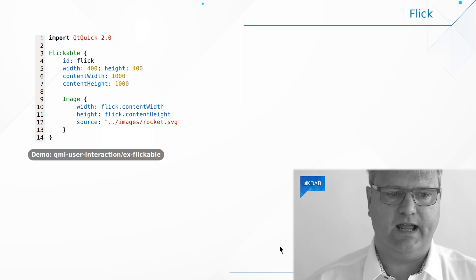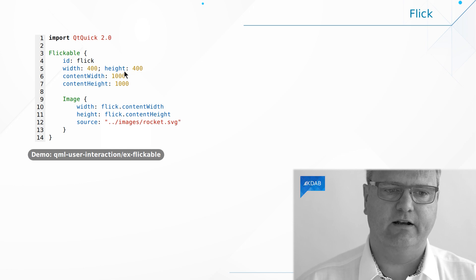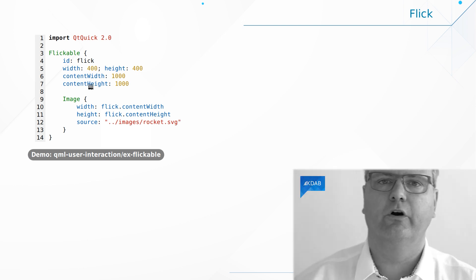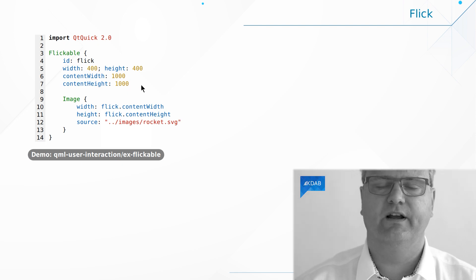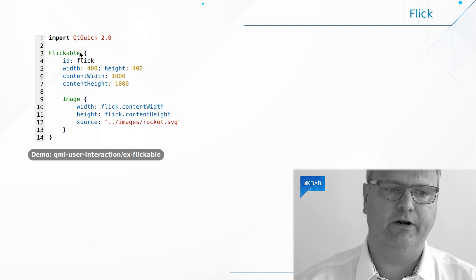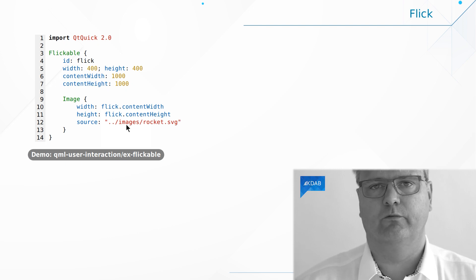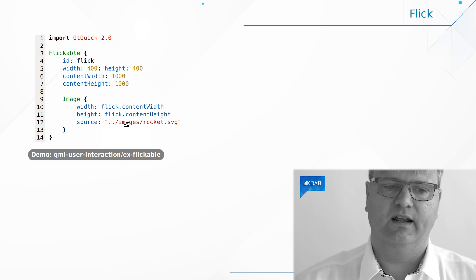There is an element called a Flickable. I basically create a Flickable, give it a width and a height like any other QML element, and then give it a content width and a content height. The way that works is that you're looking through a little hole onto your much larger content. The much larger content is where whatever you flick around is located, and the little hole is your actual width and height of the element. In this example, my Flickable has a child — that is my image. The image is loading a source, and we specify the width and height to match the content width and content height of our Flickable.